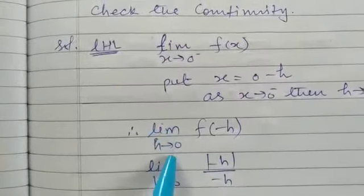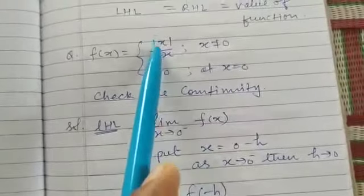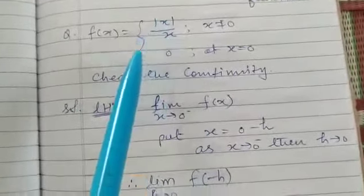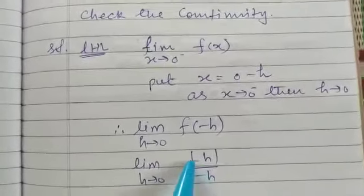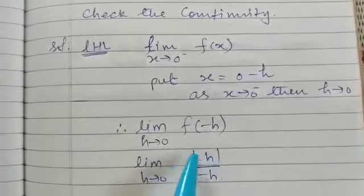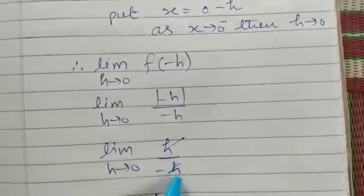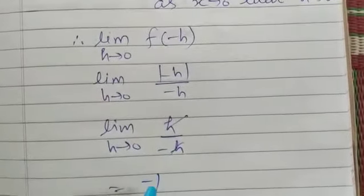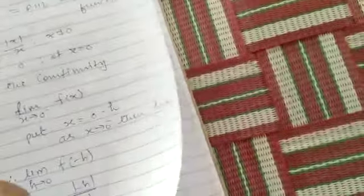So after this we will write limit h tends to 0, f of minus h. Now put this minus h in place of x, so we will get limit h tends to 0, minus h upon minus h. Now if this mod sign is removed then this negative will be plus, so plus h upon minus h, it will be equal to minus 1. So this is the LHL. Now right-hand limit of this function.